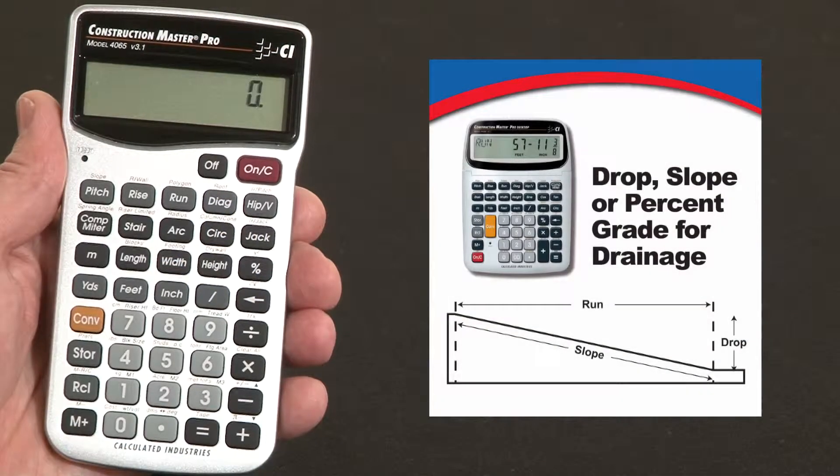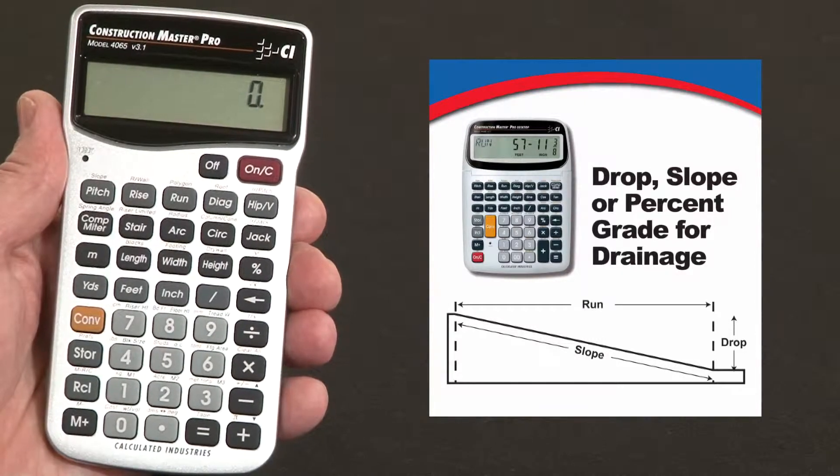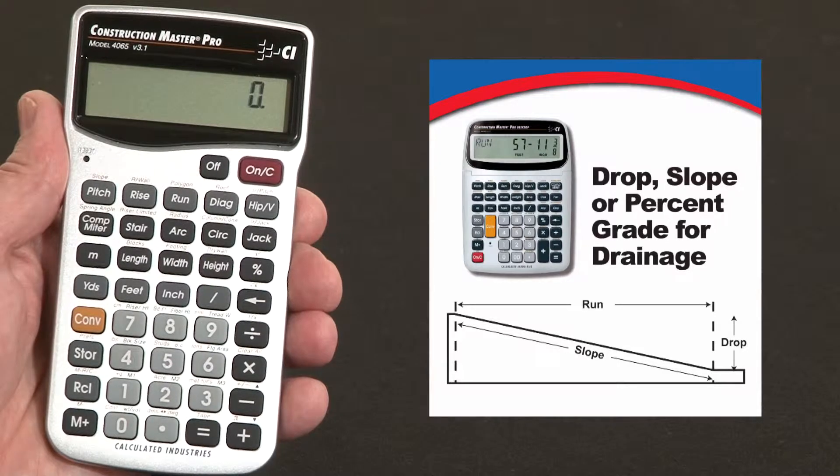Now let me show you how to find the slope or drop or drainage for a pad using the Construction Master Pro. Keep in mind if you're using the trig model or the desktop model, the keystrokes will be exactly the same.